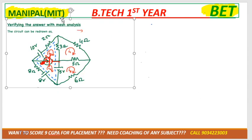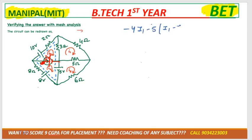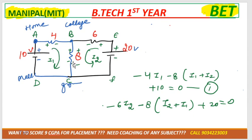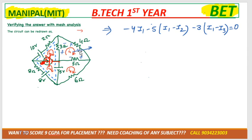Understood? So now the first mesh equation. For the second mesh equation, press minus. I1 and I2 are both in the same direction. Whenever the sign is same — like direction is same, all are clockwise — that means it will be negative. For the second mesh equation, press 5. I got that. Now for the third — minus I2.